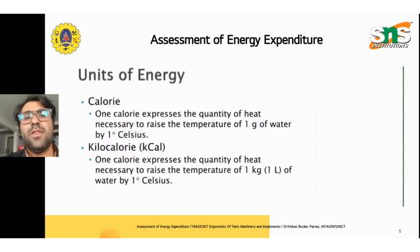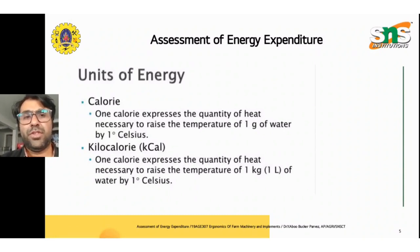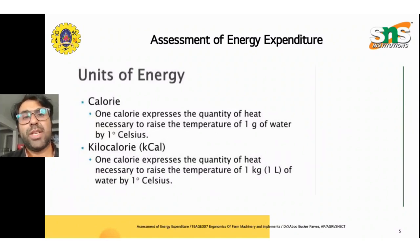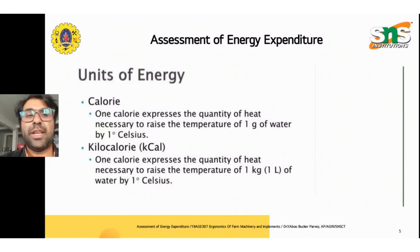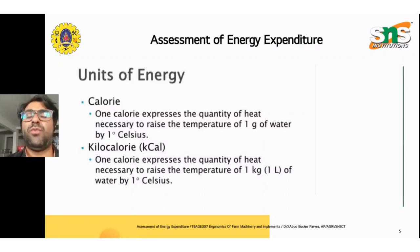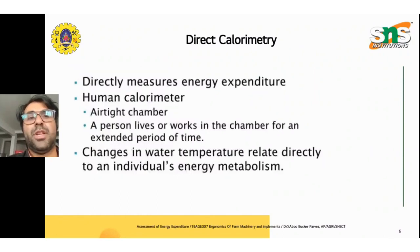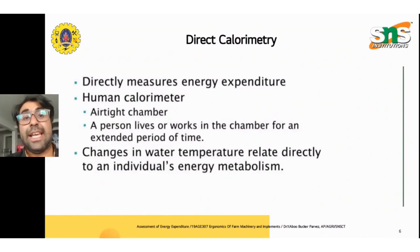First, we need to know the basic units of energy. One calorie expresses the quantity of heat necessary to raise the temperature of one gram of water by one degree Celsius. A kilocalorie expresses the quantity of heat necessary to raise the temperature of one kilogram, that is one liter, of water by one degree Celsius.